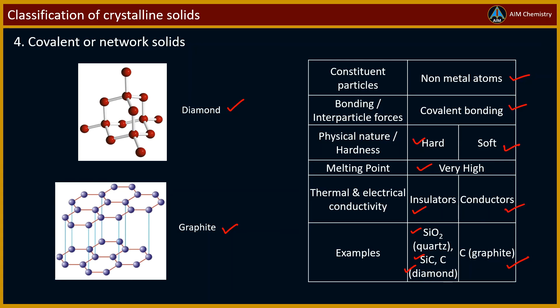This is because in structure of graphite, carbon atoms are arranged in different layers, and each atom is covalently bonded to three of its neighboring atoms in the same layer.